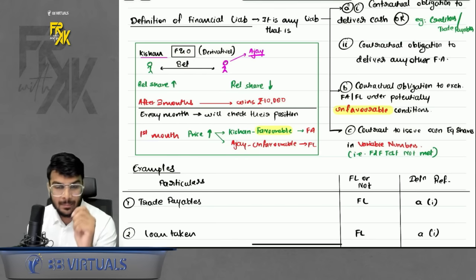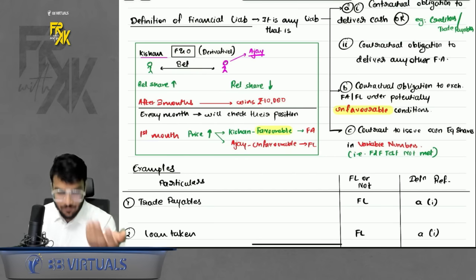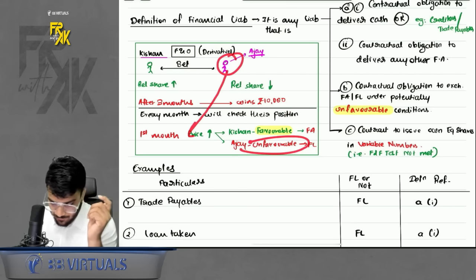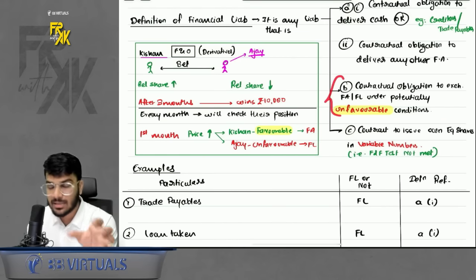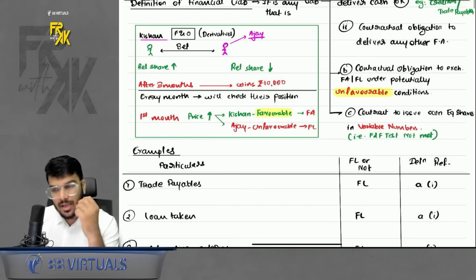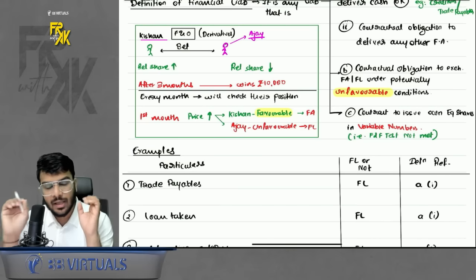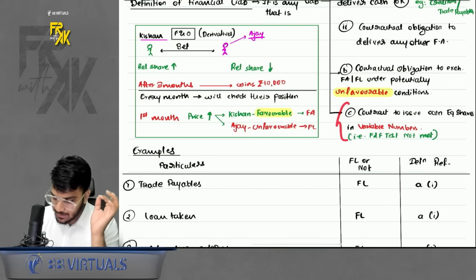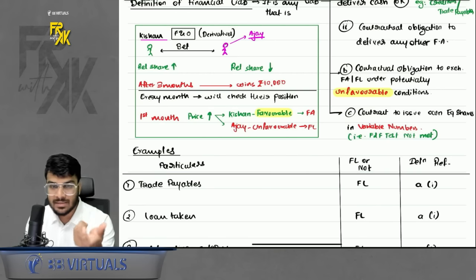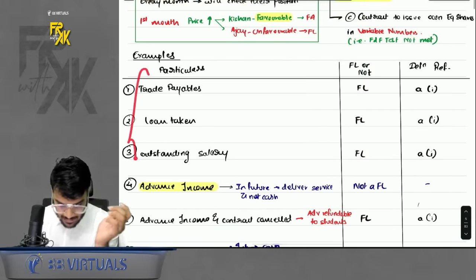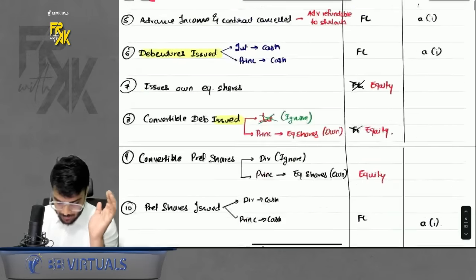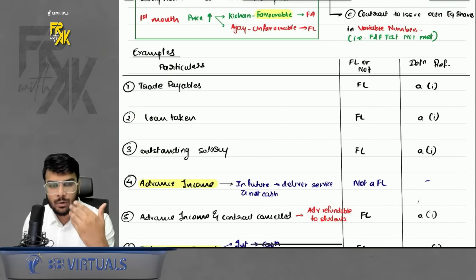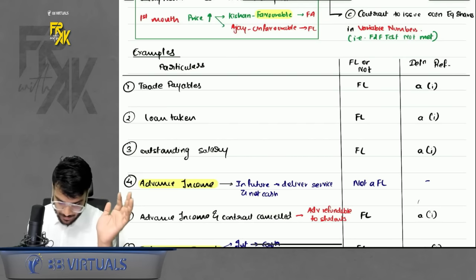For derivative contracts, just as for one party the position will become favorable — making it a financial asset — for the other party the position will become unfavorable, making it a financial liability. Examples of financial liabilities: trade payables, loans taken — where you have an obligation to repay interest and principal — and outstanding salary, which is also a financial liability because the company will have to pay the salary someday.